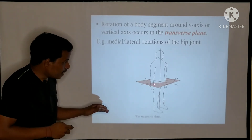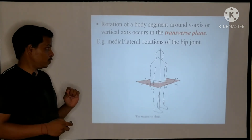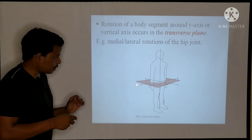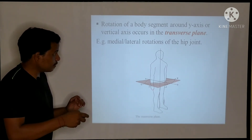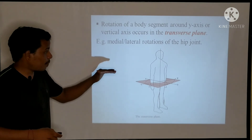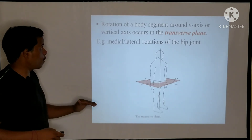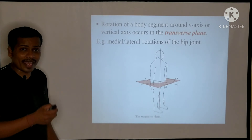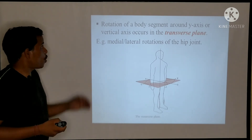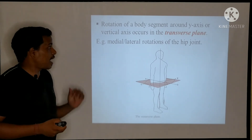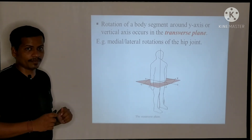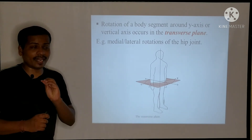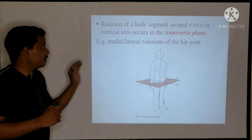The transverse plane divides the human body into upper half and lower half. The rotation of a body segment around the Y-axis, or vertical axis, occurs in the transverse plane. Movements seen in the transverse plane include medial and lateral rotations of the hip joint.